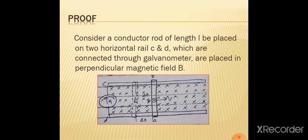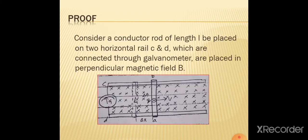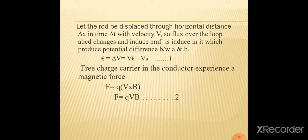Flux change ہونے سے EMF induce ہو جائے گی، جس کا مطلب ہے کہ potential difference create ہو چکا ہے۔ e = ΔV، اور potential difference ہوگا ΔV = V_B − V_A، یعنی potential at point b minus potential at point a۔ اسے equation number 1 کا نام دیا۔